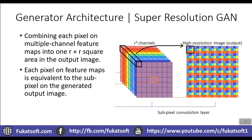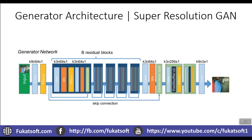So this is the generator architecture for Super Resolution GAN. We have the low resolution input image first. We go through a convolutional layer with a 9x9 kernel size, 64 channels, and stride equal to 1. The image is then passed through the Parametric ReLU activation function. There are also skip connections — the Parametric ReLU output is passed both to subsequent convolutional blocks and also directly to the element-wise sum layer later in the architecture.